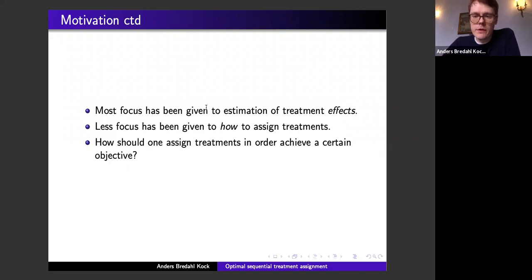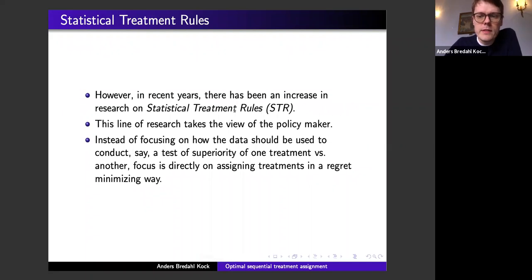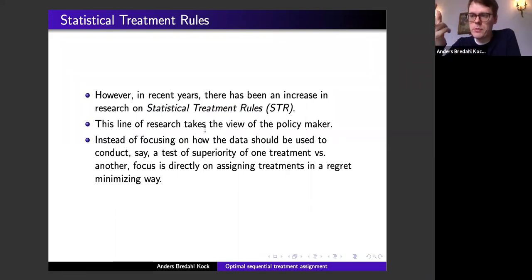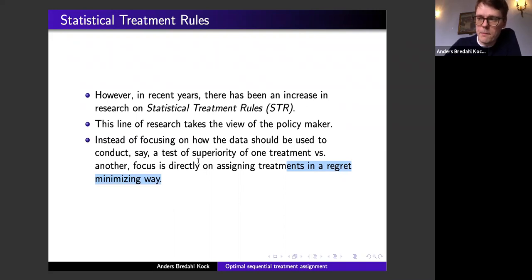Most focus in the literature on treatment allocation has been given to estimating treatment effects. Less focus has been devoted to the question of how one should assign treatments in order to achieve a certain objective. In recent years there has been increasing focus on so-called statistical treatment rules, which take the view of the policy maker rather than focusing on hypothesis testing.